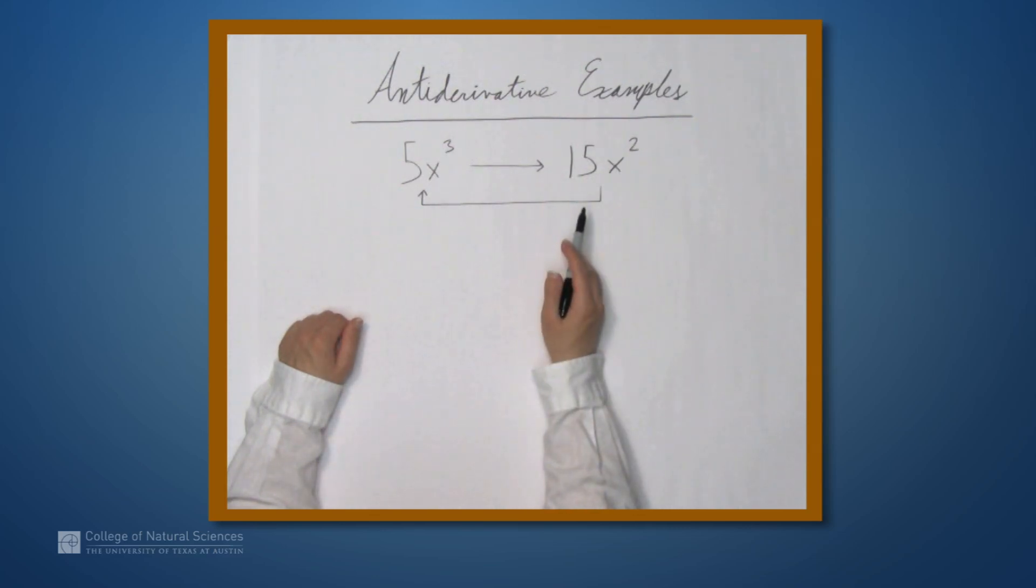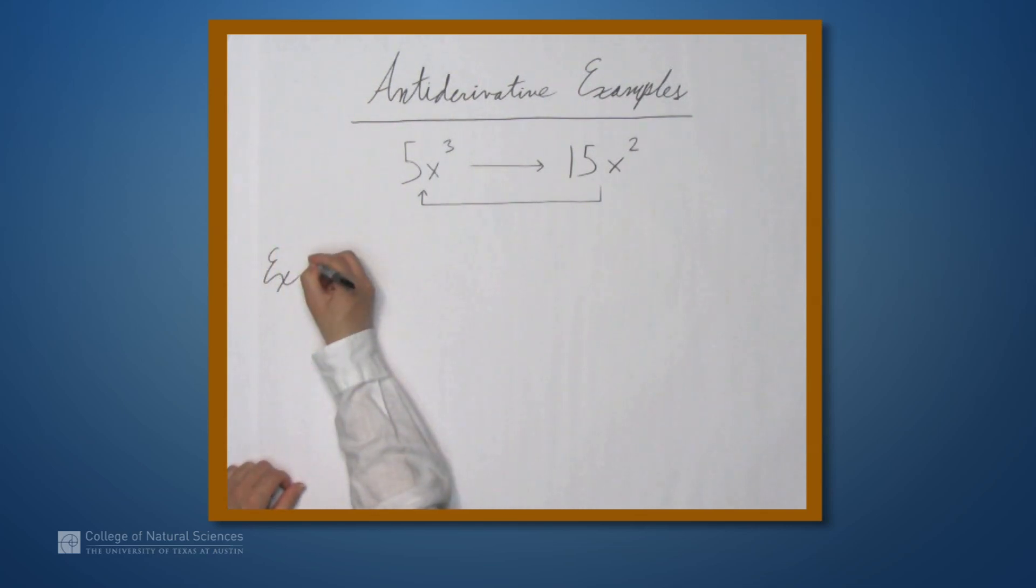So let's look at some examples. Let's start with perhaps the simplest kind of function, namely a constant function. So let's suppose that the derivative of f is equal to 2.